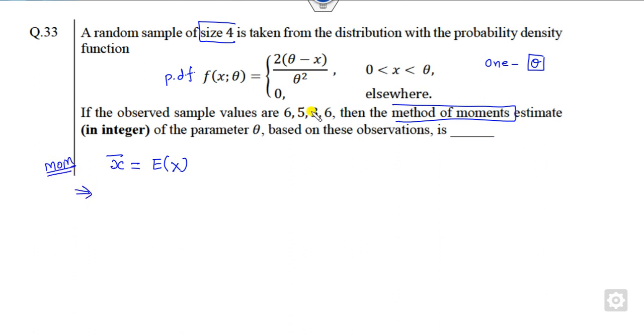Now what is the sample mean? We all know how you compute them: 6 plus 5 plus 3 plus 6 divided by 4. How you compute the expected value? This is x into f(x) integrated over the domain. Now how you can solve this? What happens on the left hand side? It is nothing but my 20 upon 4.